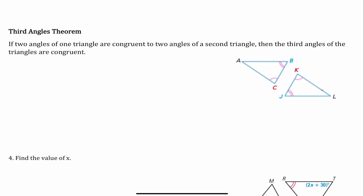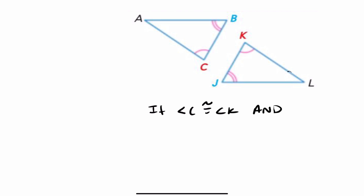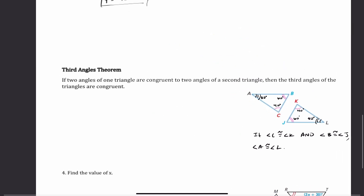The Third Angles Theorem states that if two angles of one triangle are congruent to two angles of a second triangle, then the third angles of the triangles are also congruent. For example, if angle C is congruent to angle K, and angle B is congruent to angle J, then angle A must be congruent to angle L. If two angles are 40° and 60°, the third angles must both be 80°.